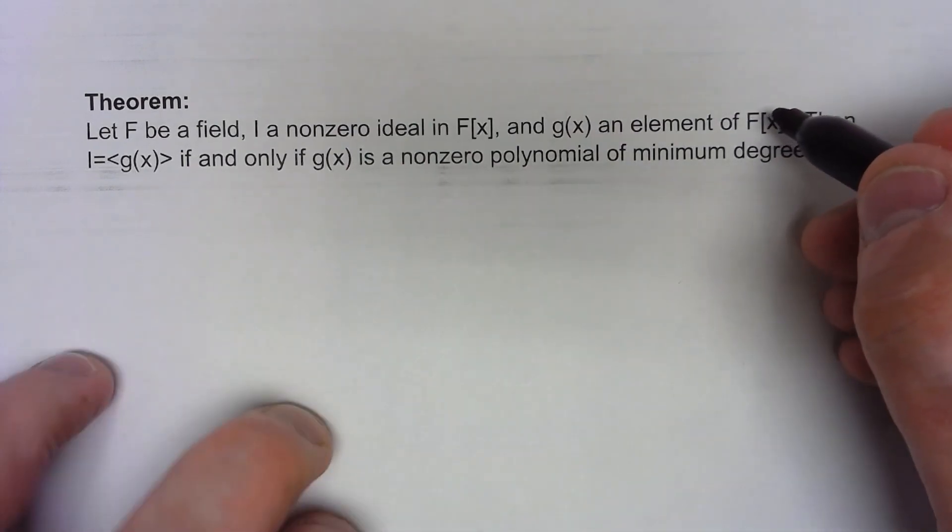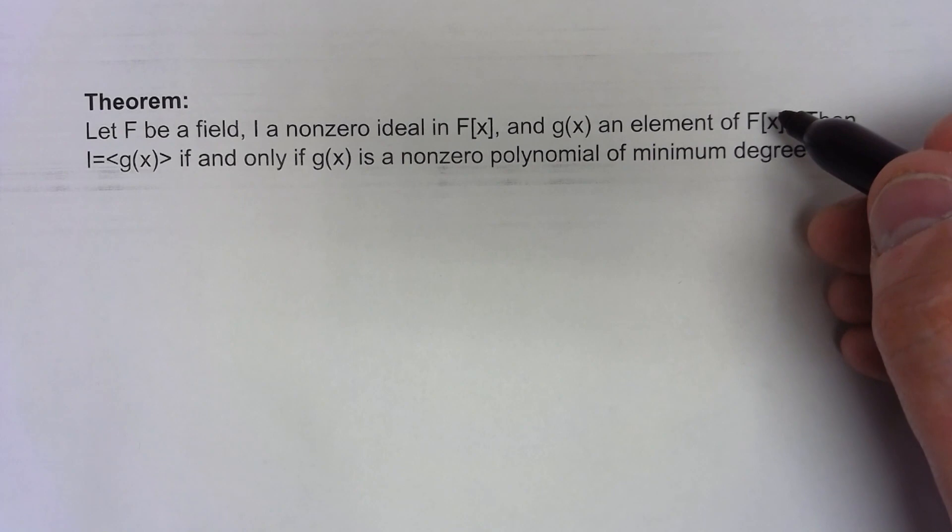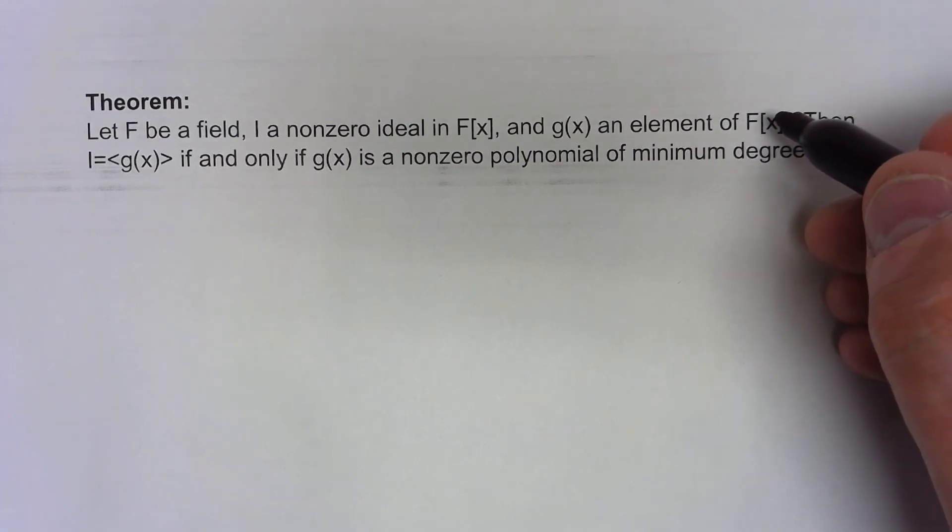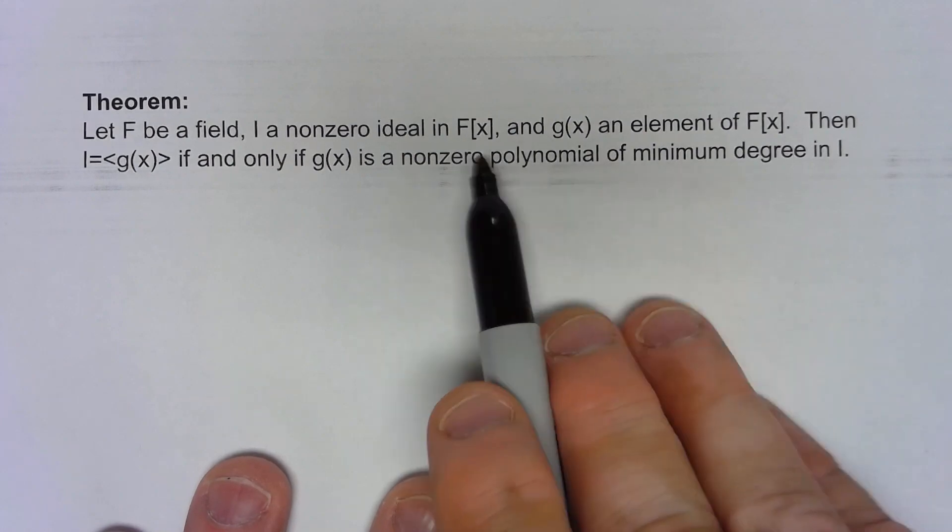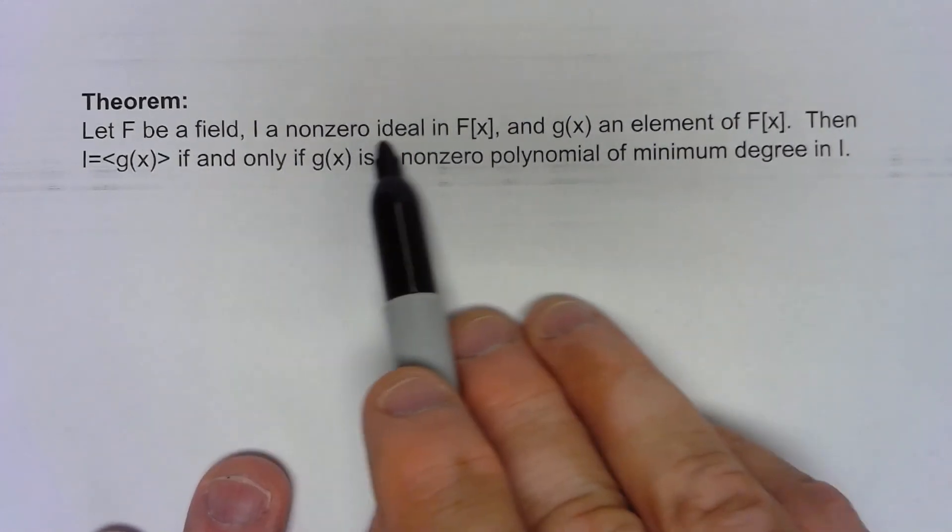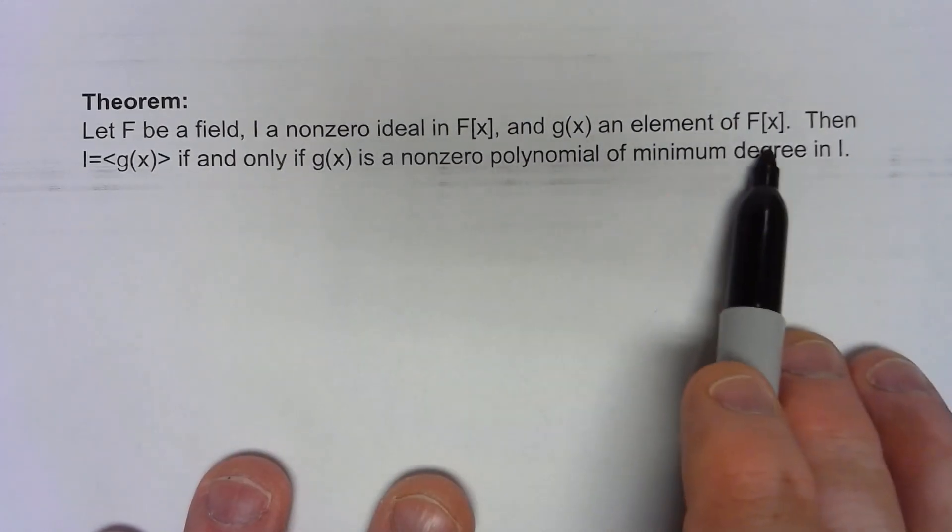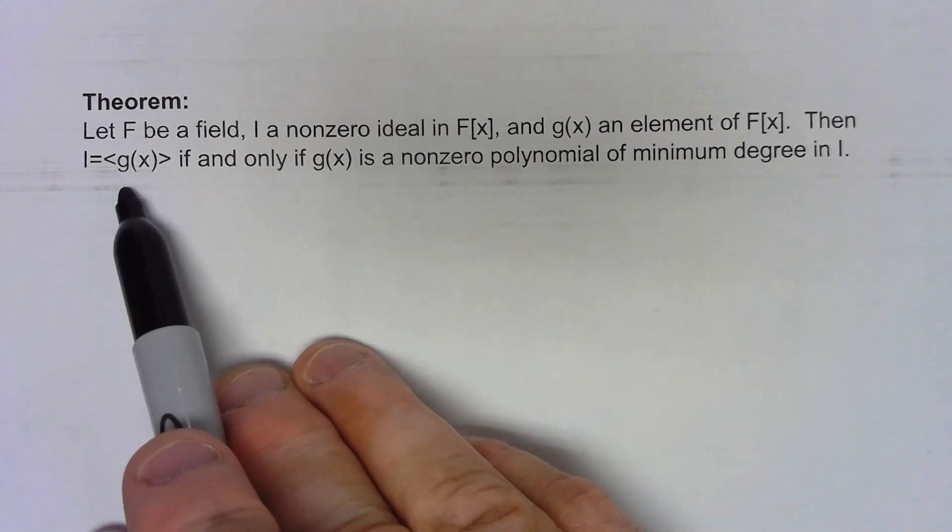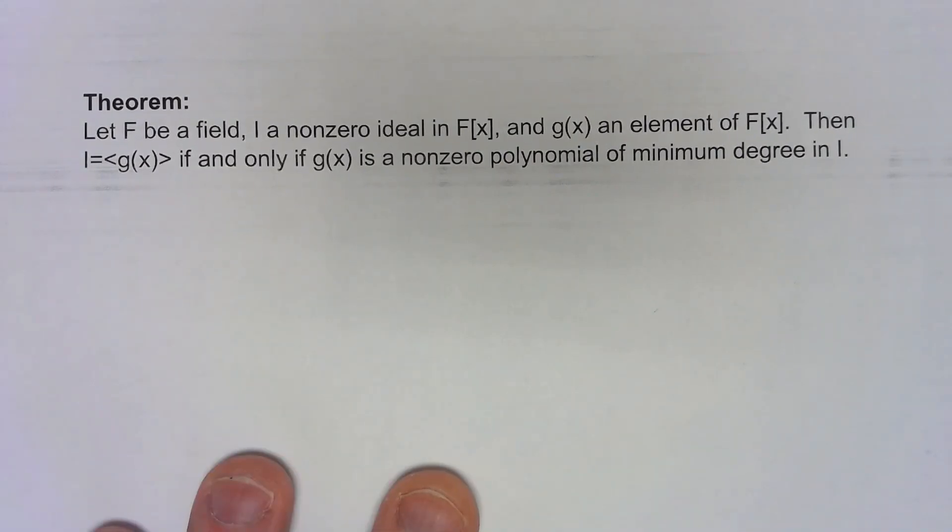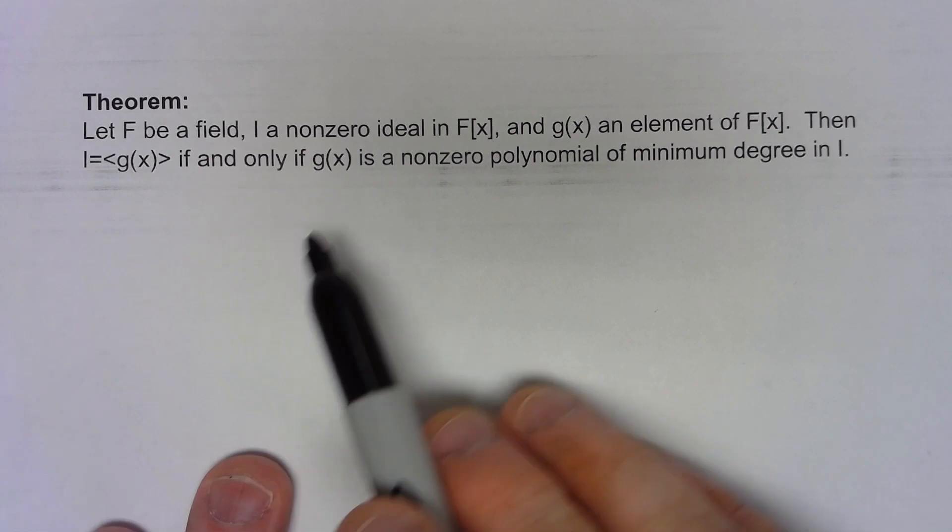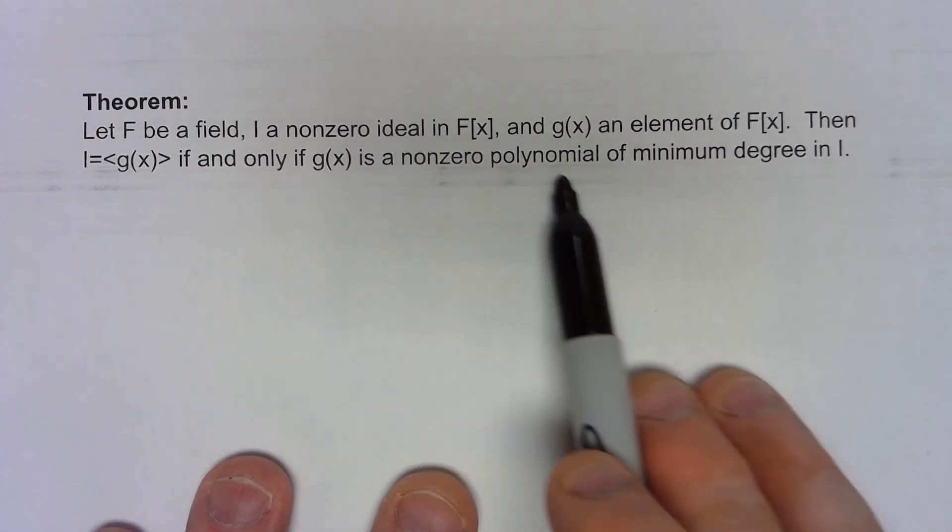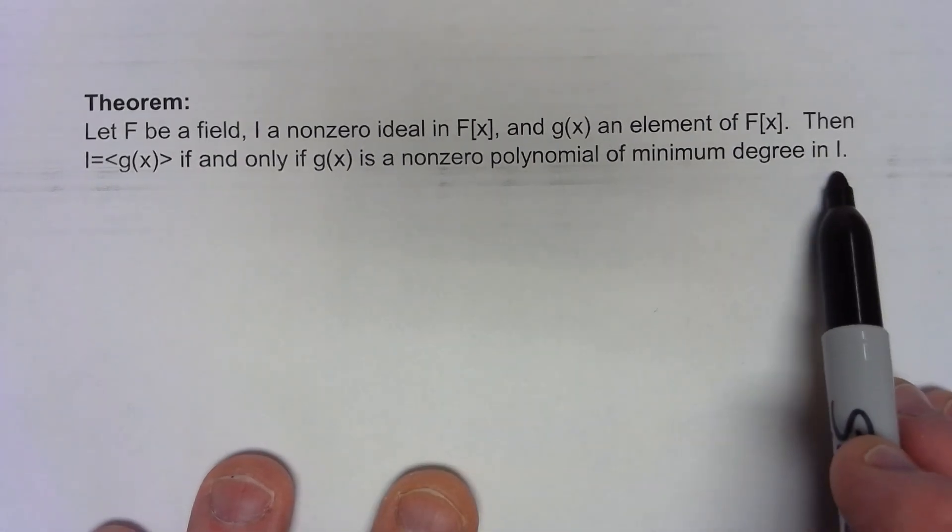Actually, hold on, let me get this exactly right. If we've got a field, we've got a nonzero ideal, and g is an element of F[x], that ideal is generated by that polynomial if and only if it's a nonzero polynomial of minimum degree in that ideal.